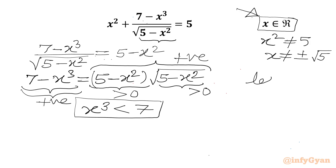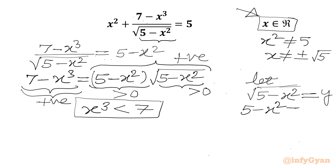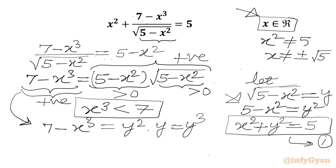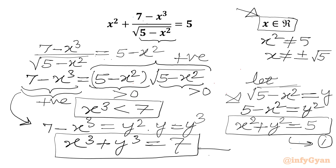Now we can use substitution. Let y = √(5 − x²), so 5 − x² = y², which gives x² + y² = 5. Call this equation 1. And from 7 − x³ = (5 − x²)·√(5 − x²) = y³, we get x³ + y³ = 7. Call this equation 2. Remember x³ < 7.